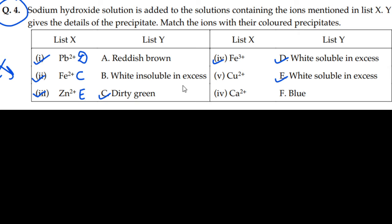Fourth question. Fe³⁺. This is very simple. This is reddish brown color, so this will be A. Whenever you are writing in your exams, if you write Fe³⁺, since reddish brown, you can write A. It is brown.